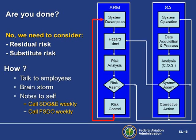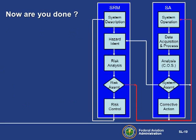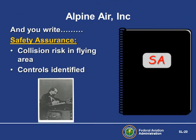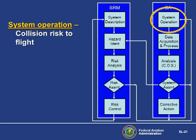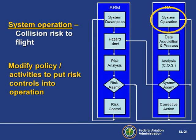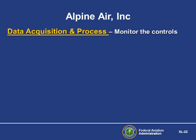How do you consider residual and substitute risk? You can talk to your employees, brainstorm with them, even populate your calendar with notes to yourself. Now are you finished with the SRM process? Yes. So what's next? You take out your safety assurance notebook and write about the risk and associated controls. Now that you have defined your risk, it's time to put your controls in place to make them operational. The next step is to consider how you will assure your controls worked and continue to be effective.